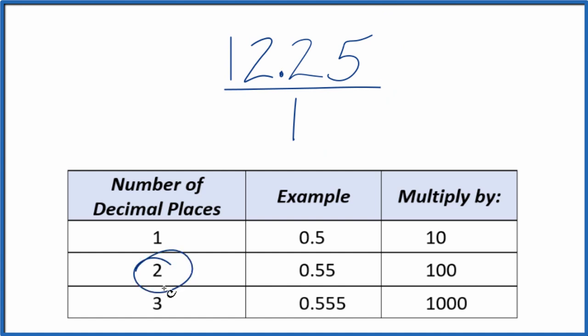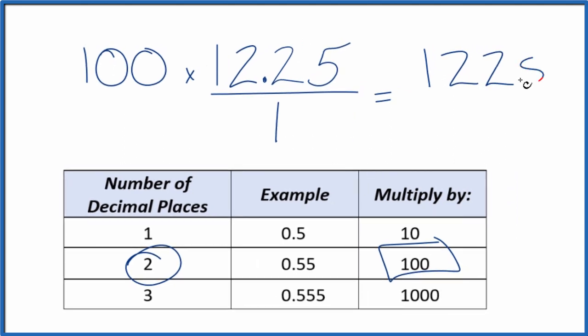So with two decimal places, I'm going to multiply the numerator here by 100. When I multiply 12.25 times 100, I end up with 1,225. That's a whole number. That's what I need.